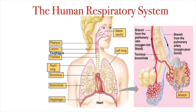The trachea splits first into two bronchi, one for each lung, and the bronchi then split into smaller and smaller tubes that end in tiny air sacs called alveoli. We have millions of these alveoli in our lungs, which are surrounded by blood capillaries and allow for the movement of oxygen gas out of the lungs and into the bloodstream, and carbon dioxide gas out of the bloodstream and into the lungs.